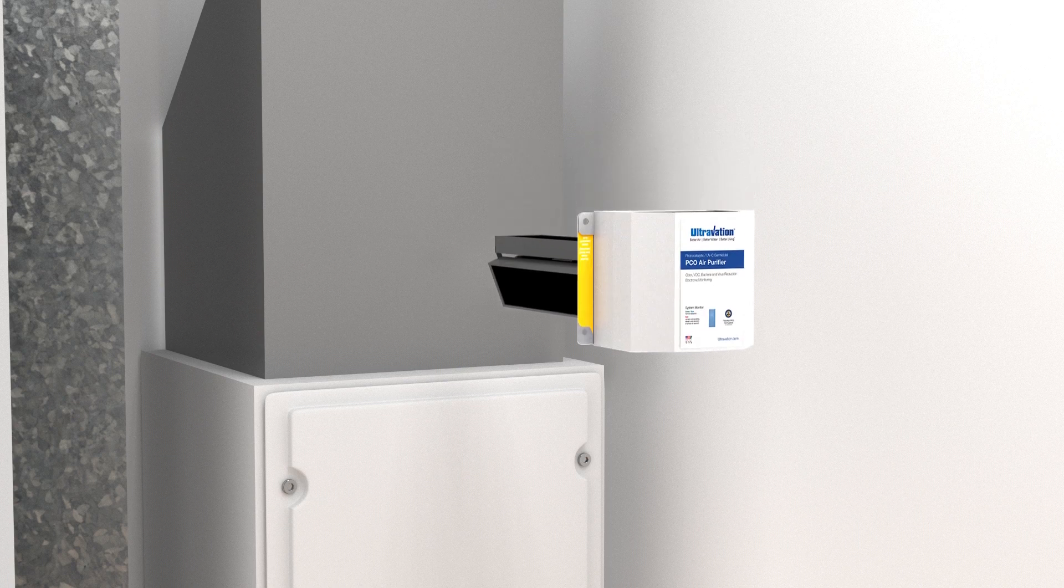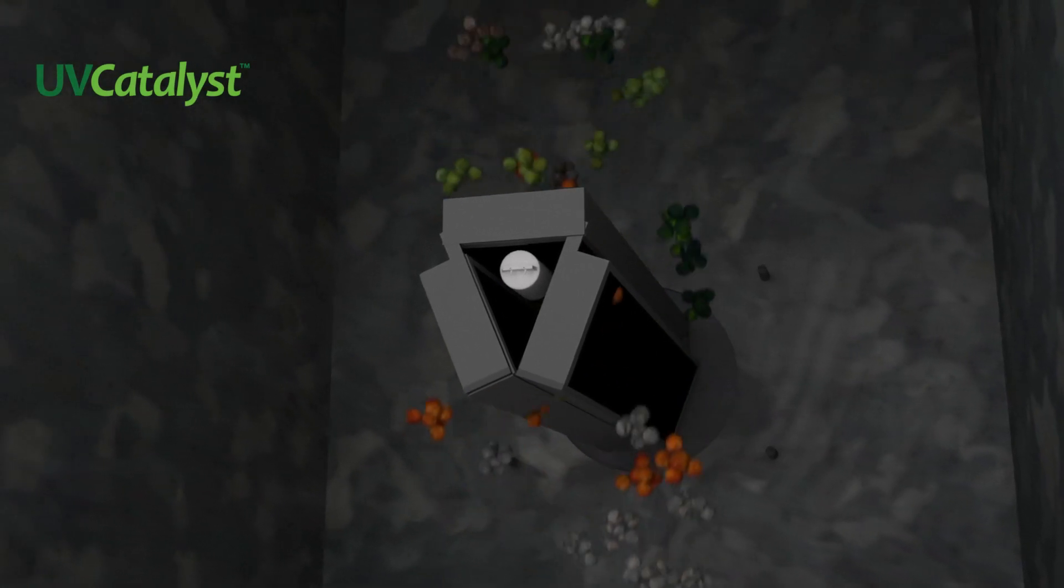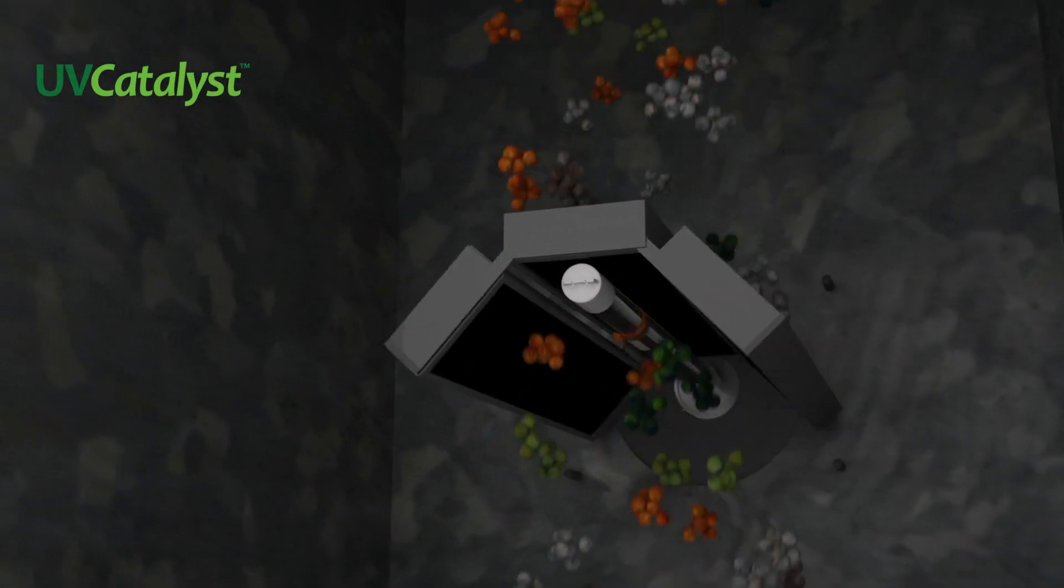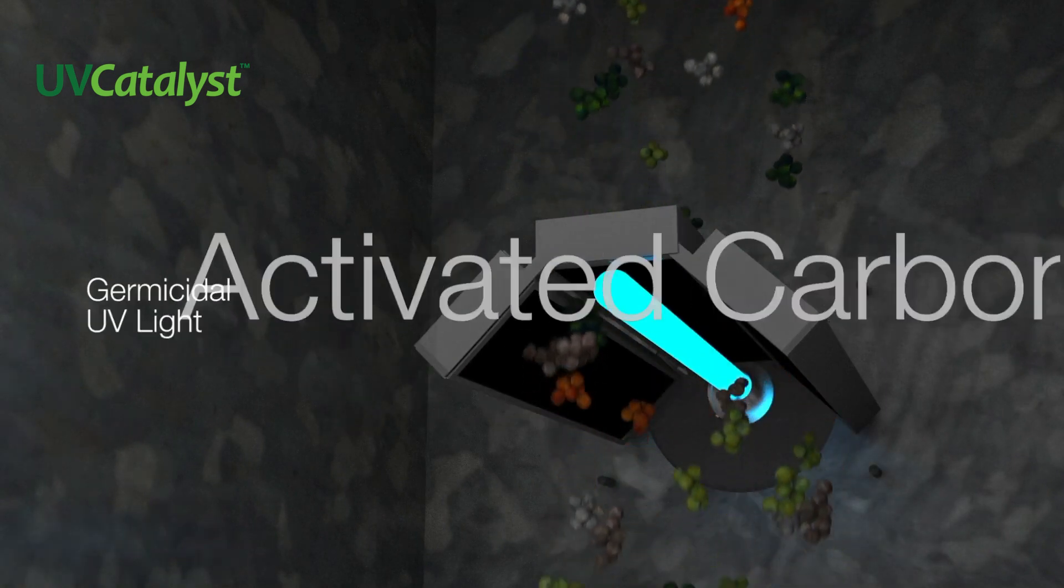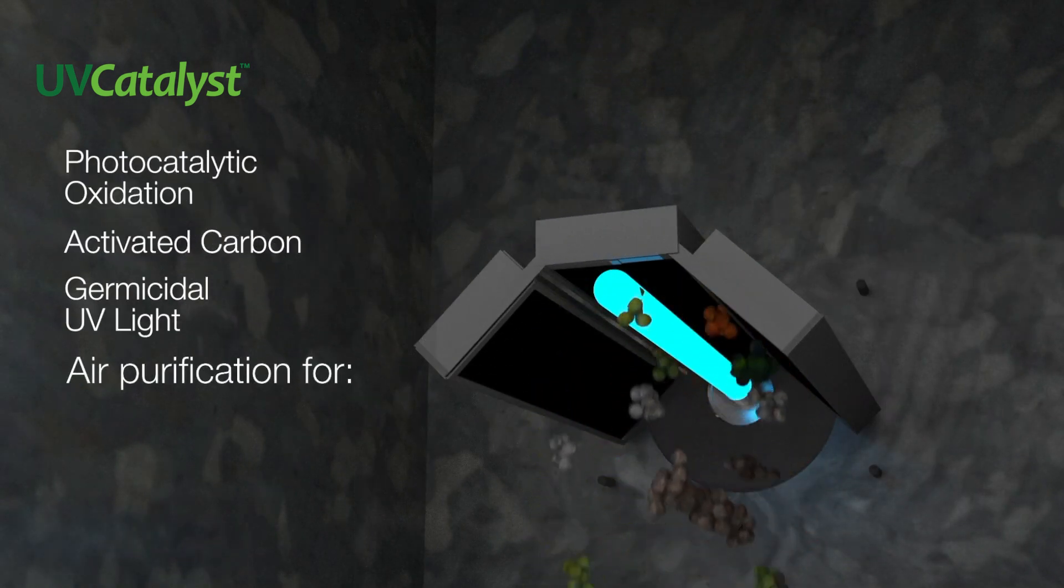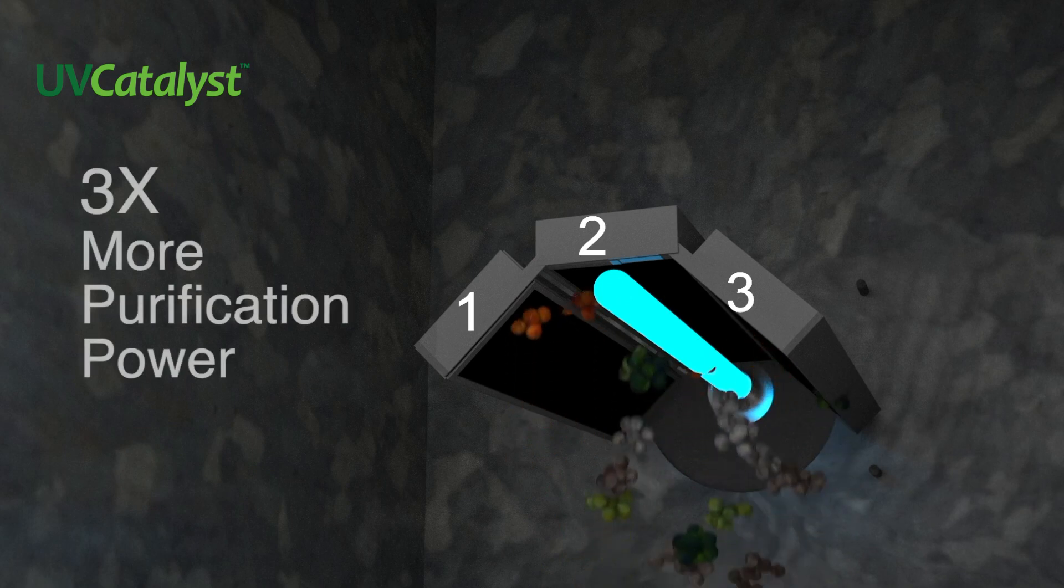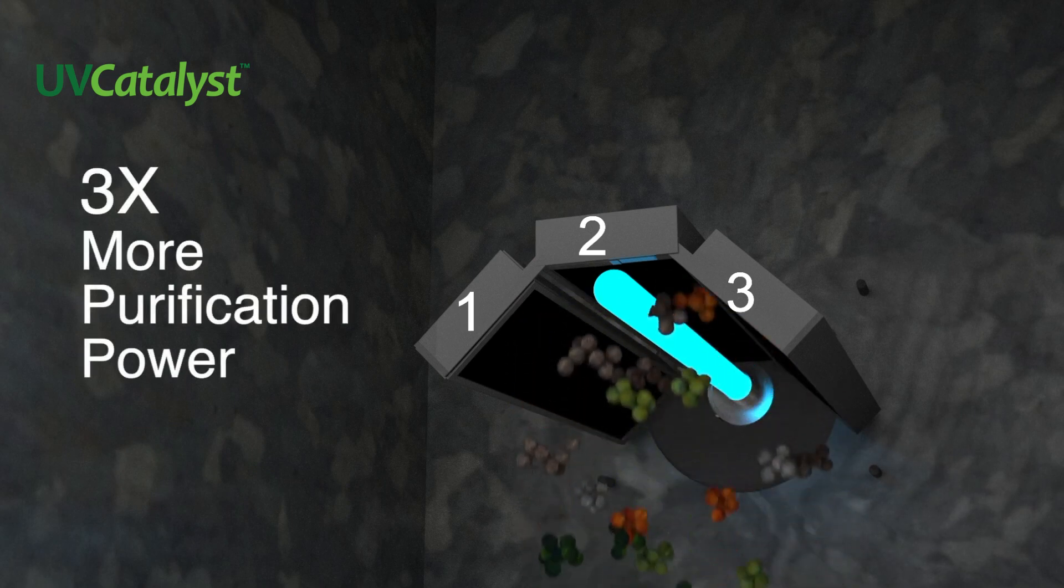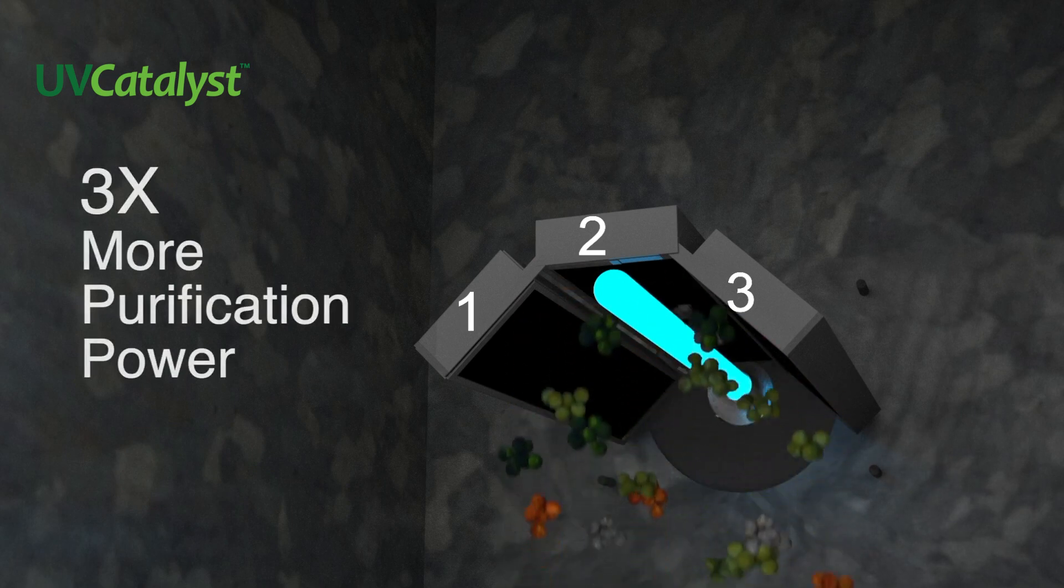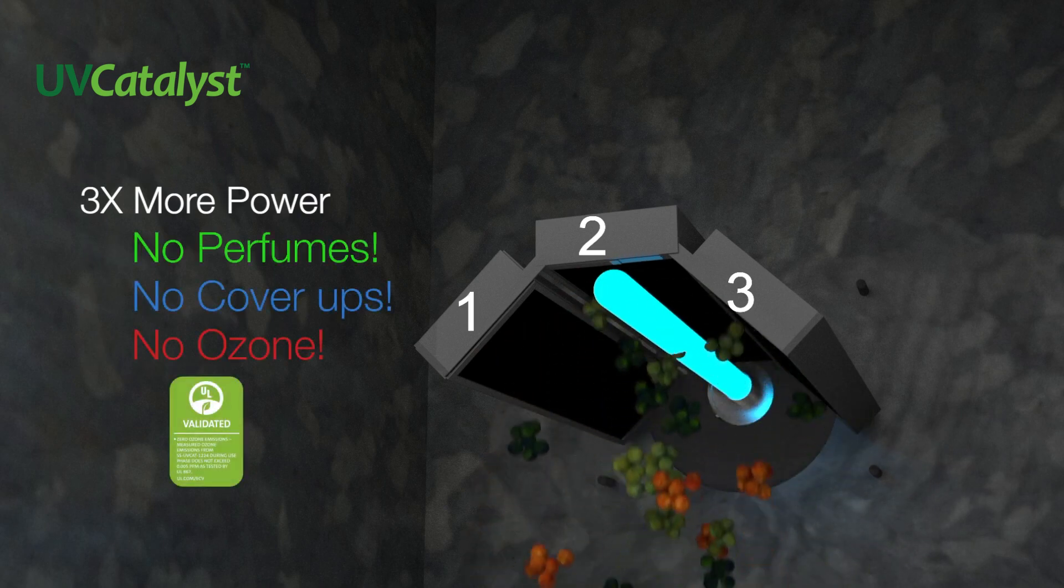UV Catalyst installs in the HVAC system where its unique 3X Catalyst air purification module is deployed inside the primary air duct. It uses the power of UV light, activated carbon and photocatalytic oxidation to clean the air of odors, bacteria and viruses. With three independent purification modules, UV Catalyst provides three times the purification power of other systems and it cleans the air with no perfumes, no cover-ups and no ozone.